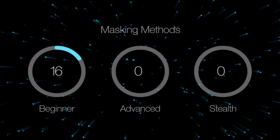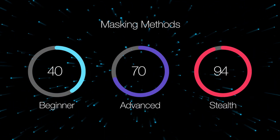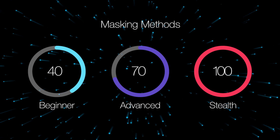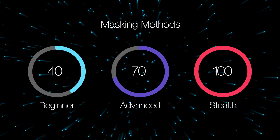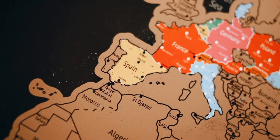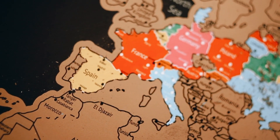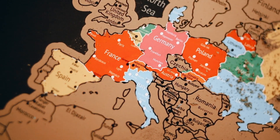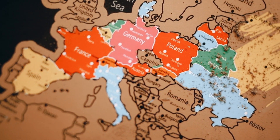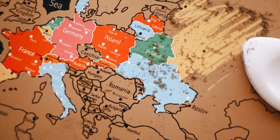In this video, we will explore several methods for bypassing Internet censorship, starting with less effective ones and moving on to more reliable ones. This is important because different countries and networks may have their own restrictions, and what works in one may not work in another.